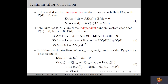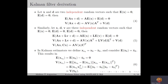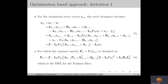In Kalman estimators, we denote the estimation error vector as x̃k, which is the difference between the actual state and the estimated state. We also consider the estimate x̂k as the expectation of the state vector. Then for the estimation error vector, we obtain the expectation as 0 since E[xk] = x̂k, and the variance of x̃k will be the same as the variance of xk. We start with the optimization-based approach, also called the minimum mean-square error derivation or the least-squares derivation.